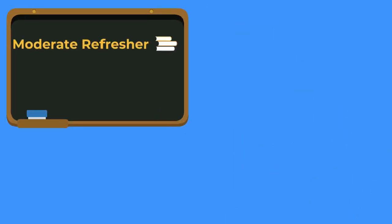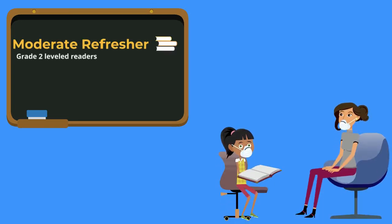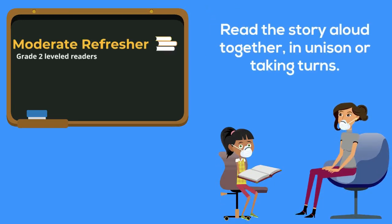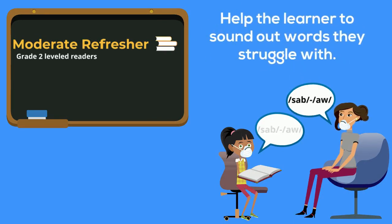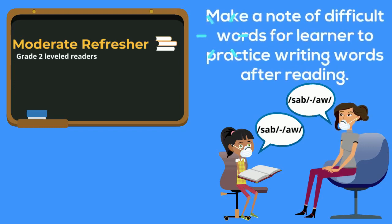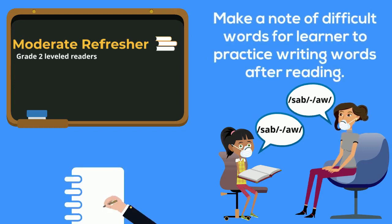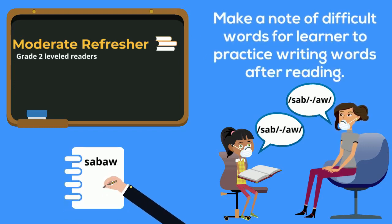Learners in need of a moderate refresher should also use grade 2 leveled readers. Read the story aloud together, either in unison or by taking turns. Help the learner sound out the words they struggle to read and take note of these difficult words. Then ask the learner to practice writing these words after you finish the story.